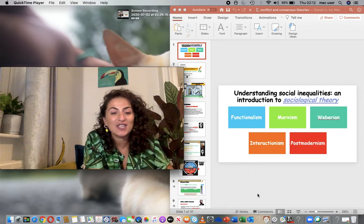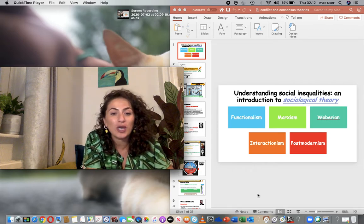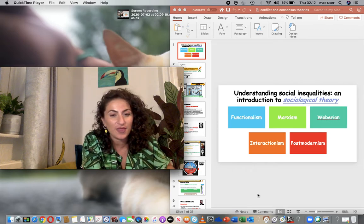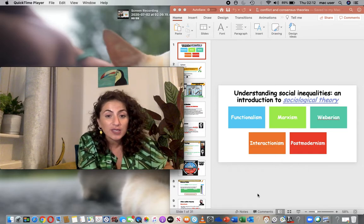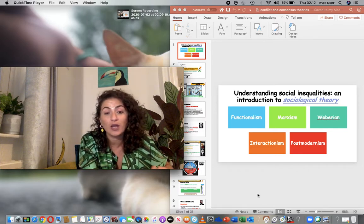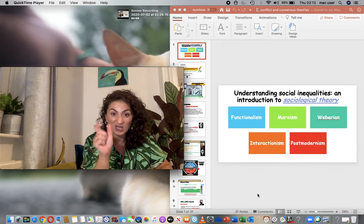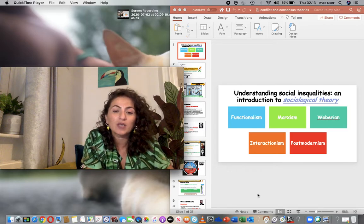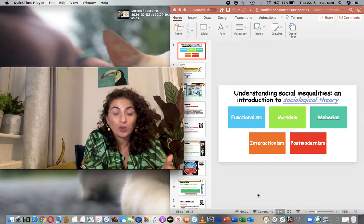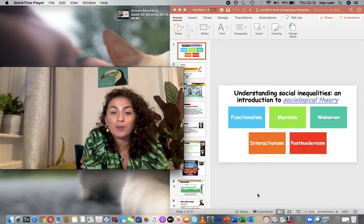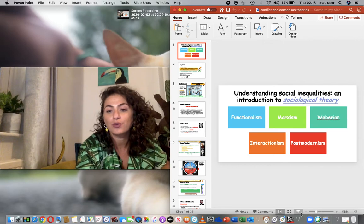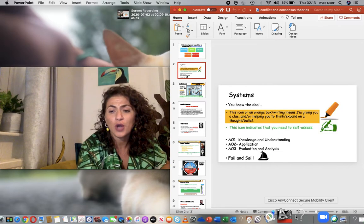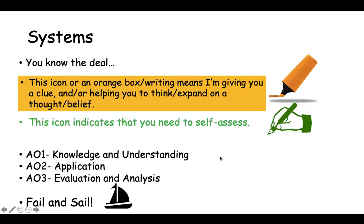Welcome back to another lesson. Today we will be looking at conflict and consensus theories. I purposely missed out your AO1, AO2, and AO3 links on each PowerPoint, mainly because I want to see how and where you would place them. Just to remind you, your AO1 is knowledge and understanding.